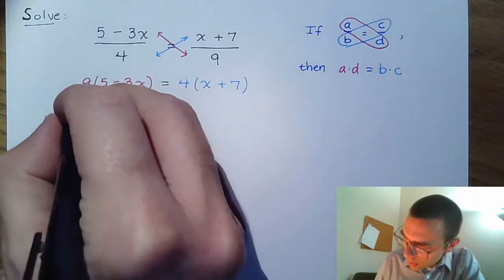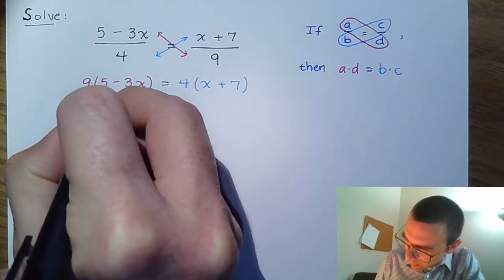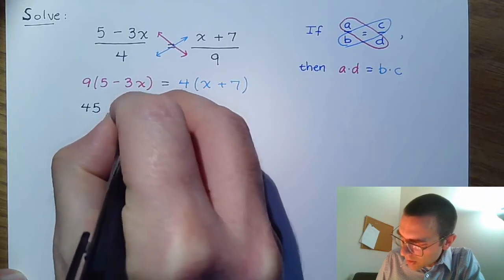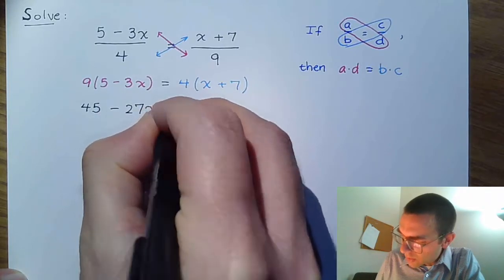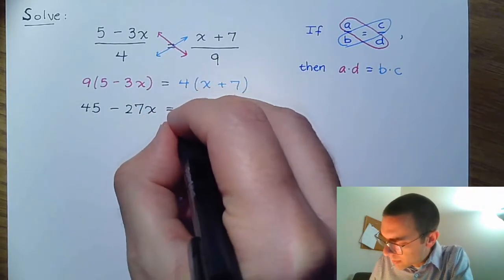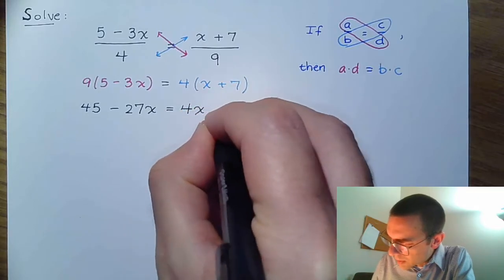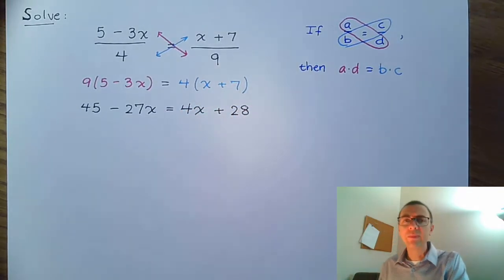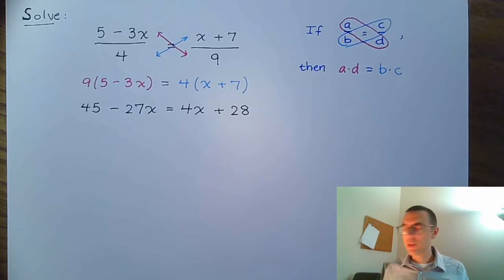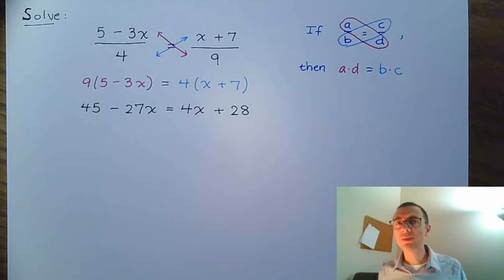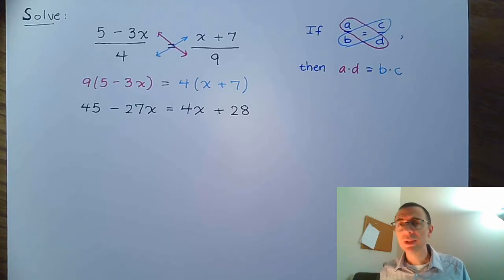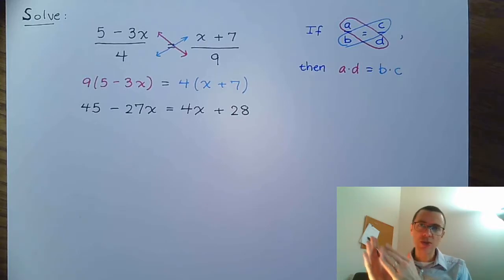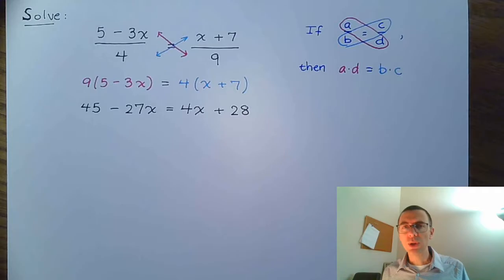When we distribute, we have 45 minus 27x on the left side, and on the right side we distribute the 4 to get 4x plus 28. Once we distribute, we see that in terms of the variables it's just x to the first power, so that means we have a linear equation. If we have something that's linear, we solve it like any other linear equation — get variables on one side, constants on the other.